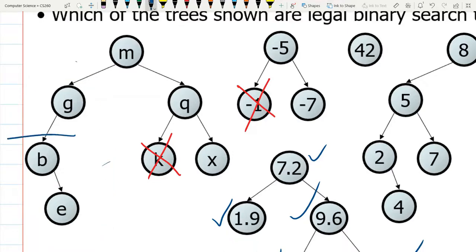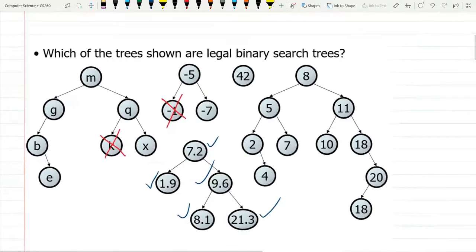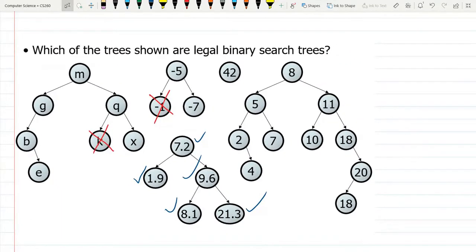Now we look all the way into the smallest subtree. B is the root, and E is to the right of B. E is greater than B. So just this right here, this subtree is a binary search tree. But again, the overall tree is not because that K is in the wrong spot.